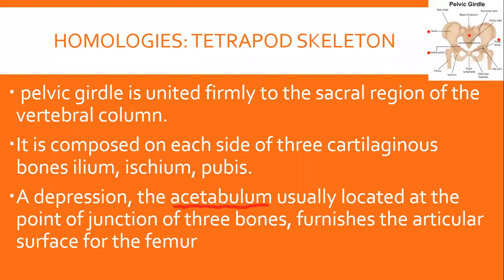اس cavity — acetabulum — کا purpose یہ ہے کہ اس کے ساتھ leg bone attach ہوتی ہے جسے femur کہتے ہیں۔ کوئی بھی tetrapod ہو — amphibian، reptile، bird یا mammal — سب کا pelvic girdle اسی structure کے ساتھ ہے۔ Difference صرف اتنا ہو سکتا ہے کہ pelvic girdle کا size کم یا زیادہ ہو، یا femur اور pelvic girdle کی attachment کی flexibility میں فرق ہو۔